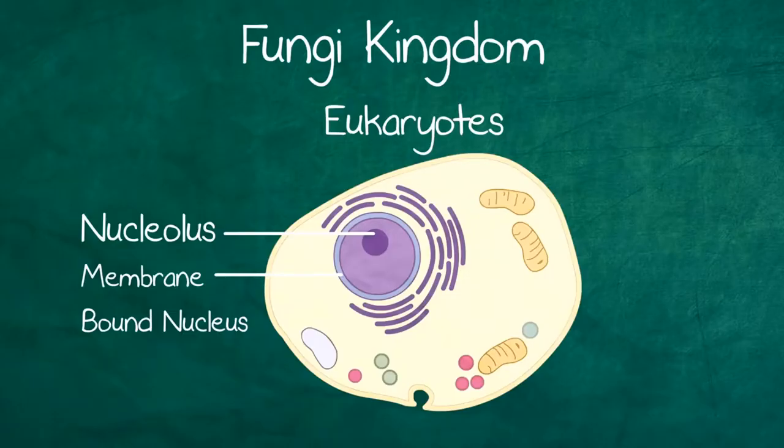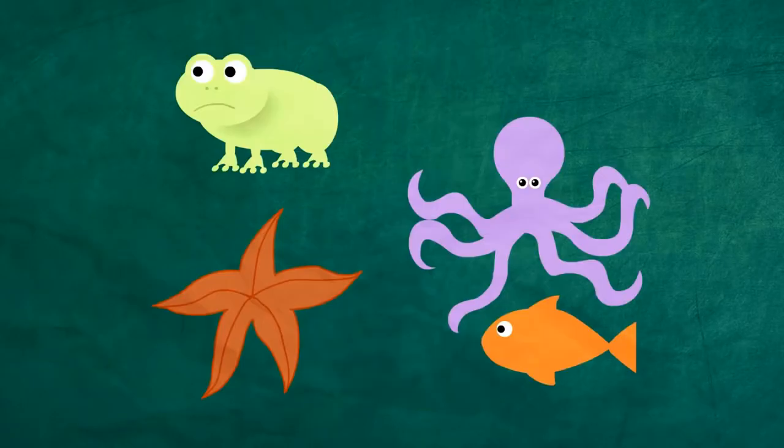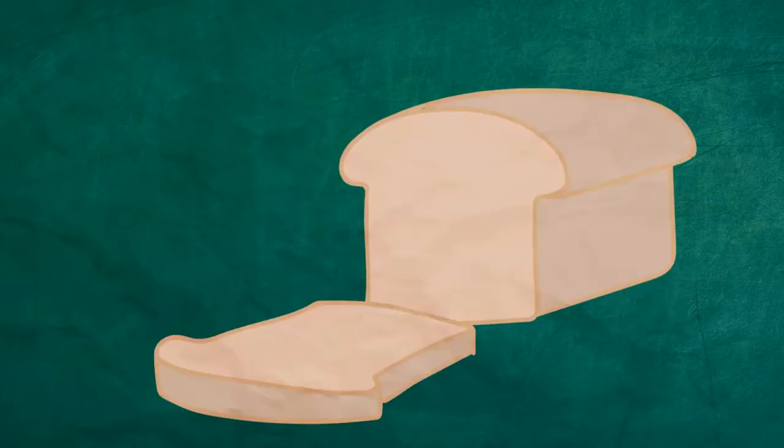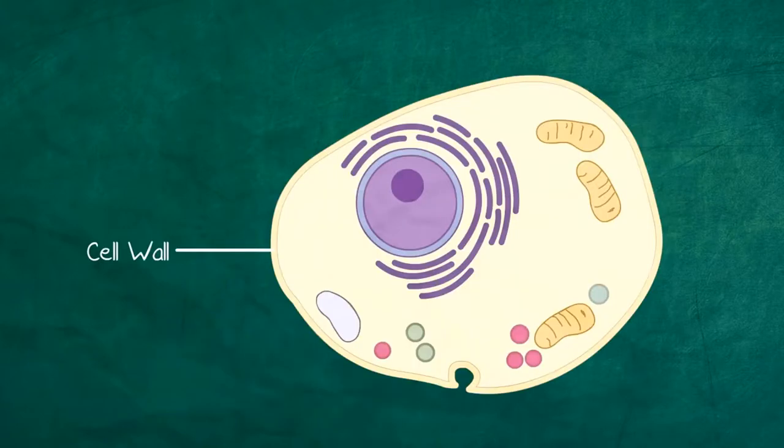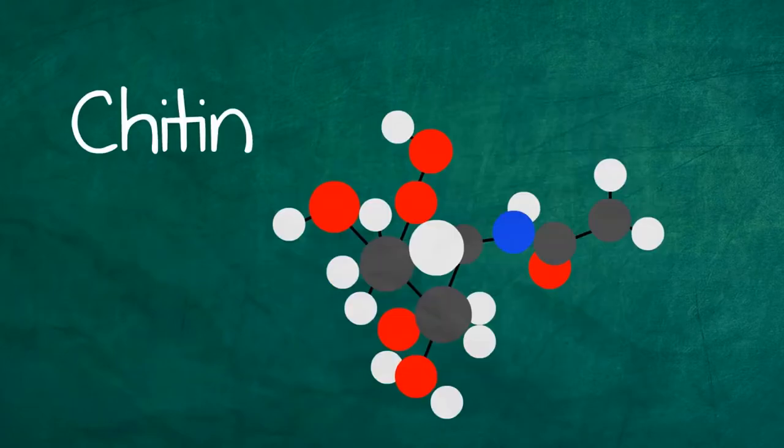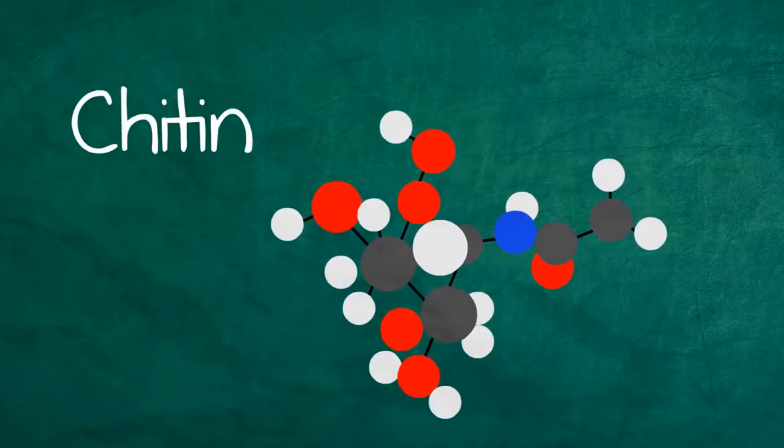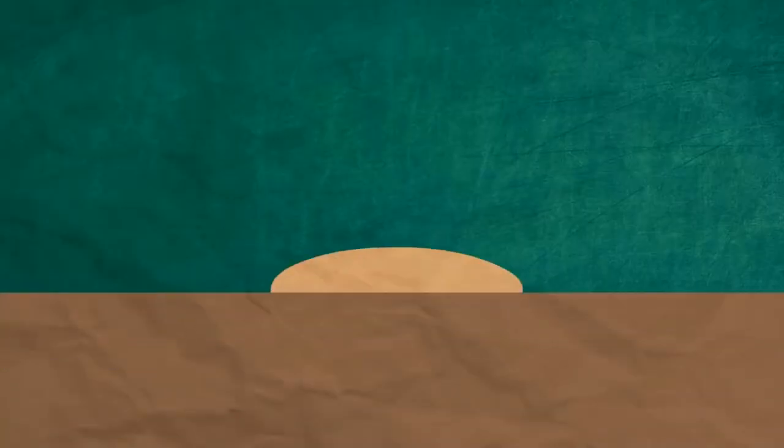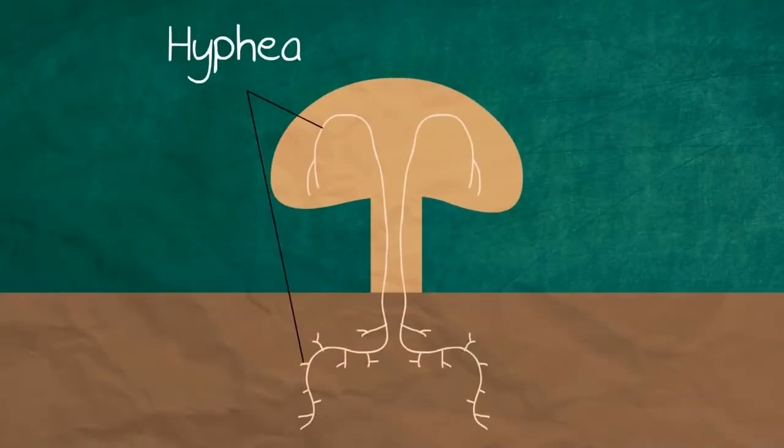The fungi kingdom are eukaryotes and can be multicellular like animals and plants but could also be unicellular such as yeast. They have cell walls like plants but have a substance called chitin rather than cellulose. They are heterotrophic and saprotrophic meaning they decompose, so they break things down or are parasitic. The body of a fungus is composed of thin filaments called hyphae. They secrete enzymes, do external digestion and then absorb the resulting nutrients.